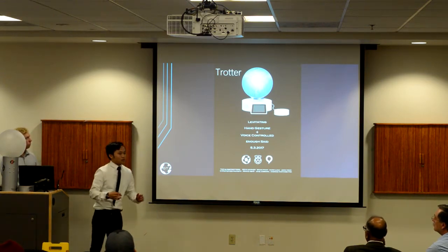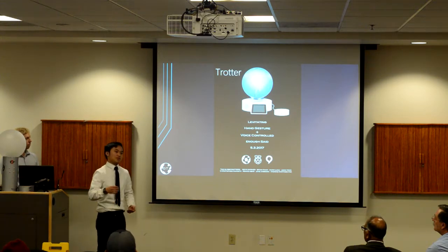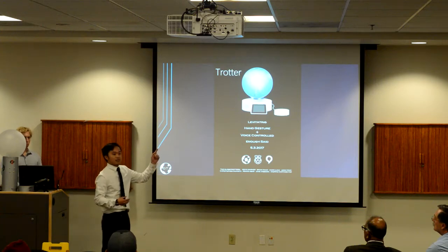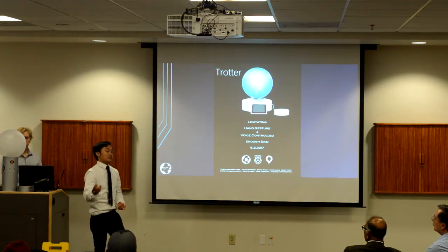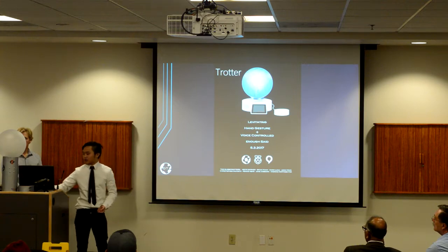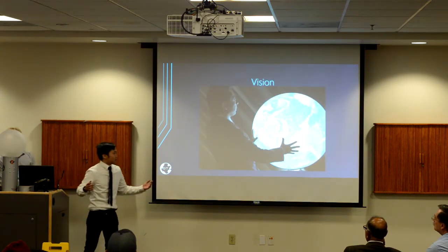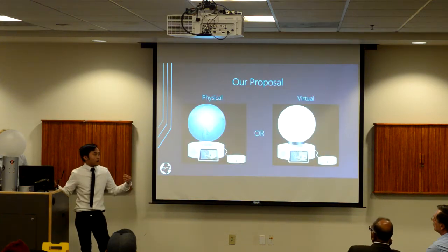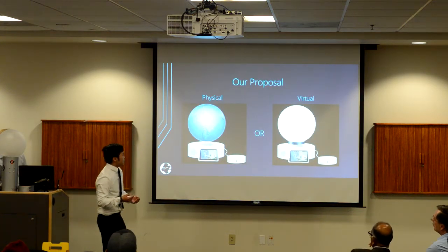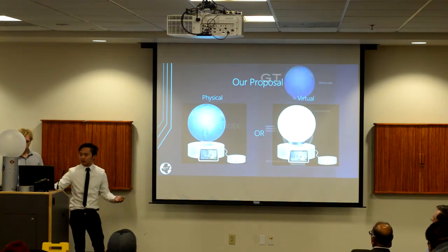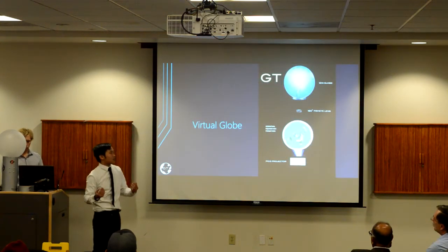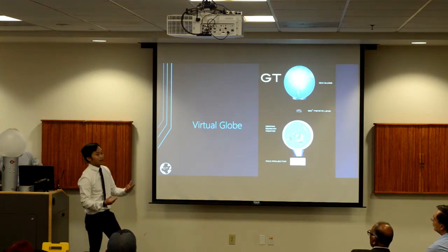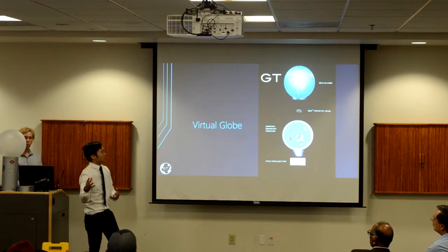To give you a little overview of how it works, you can go up to Trotter and ask for a specific location and it will rotate to that location on the globe, as well as update the display with some relevant information and pictures about that location. So our vision was to levitate either a physical globe or a virtual globe. A virtual globe is essentially projecting an image into a clear acrylic globe to have it appear as if it's actually the globe itself.